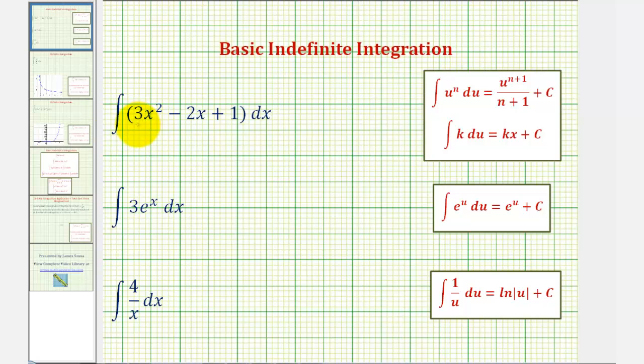So the integral of three x squared would be equal to three times the integral of x squared. Applying the integration formula here, we're going to add one to the exponent and then divide by the new exponent. And since two plus one is equal to three, we'd have x to the third divided by three.